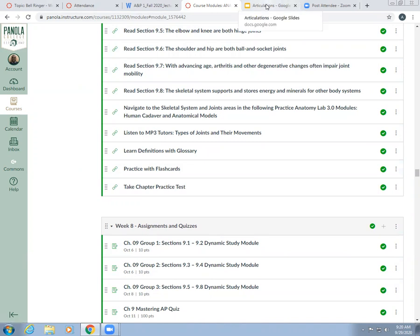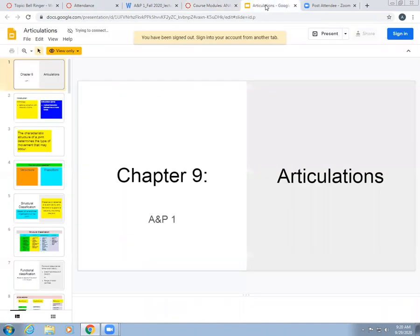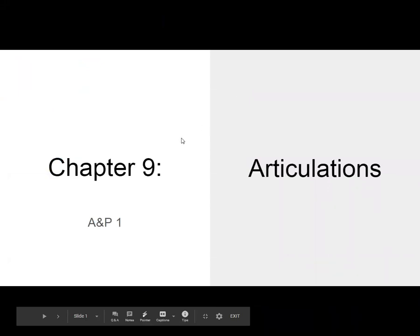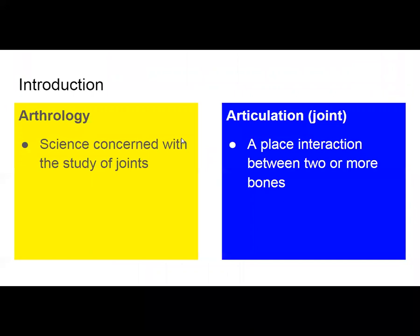Let's get into articulations. We'll start with some basic terms. Arthrology is the science concerned with the study of joints. Articulations is a fancy word for joint — a place of interaction between two or more bones. When you articulate, you're communicating and interacting, so this is bones interacting.